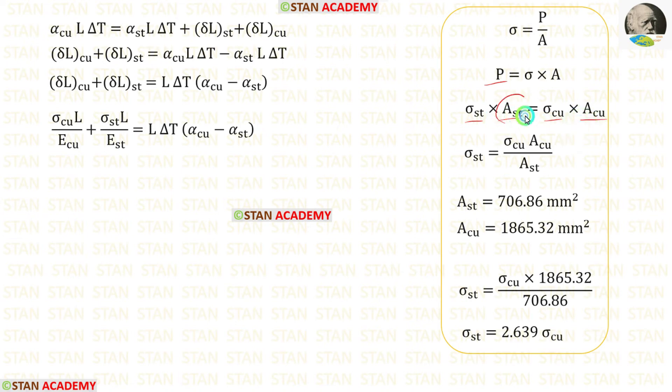Then we can take A ST on the right side, so it will come in the denominator. We know the values of A ST and A Cu. Let us apply them. Finally we are getting sigma ST is equal to 2.639 sigma Cu.